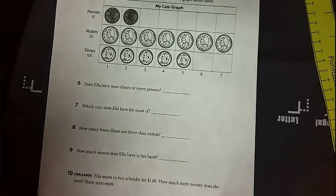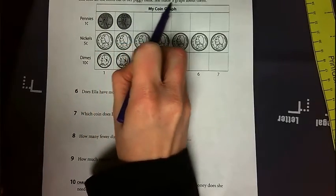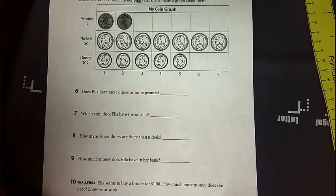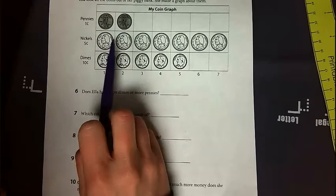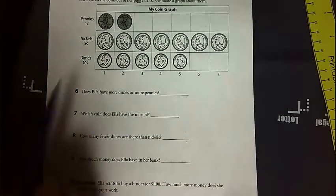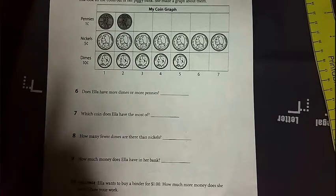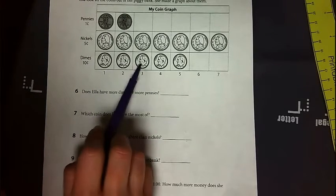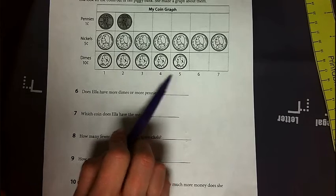Okay, very good. Flip it over to the back, and then we're going to do My Coin Graph, boys and girls. Ella took out the coins out of her piggy bank. She made a graph about them. So she has two pennies, nickels. She has one, two, three, four, five, six, seven nickels, and they're all worth five cents each. And dimes that are 10 cents each. She has one, two, three, four, five. So we have a nice graph with pictures and labels.